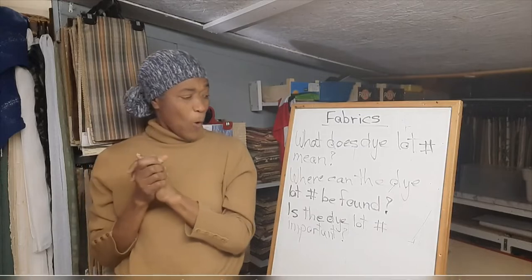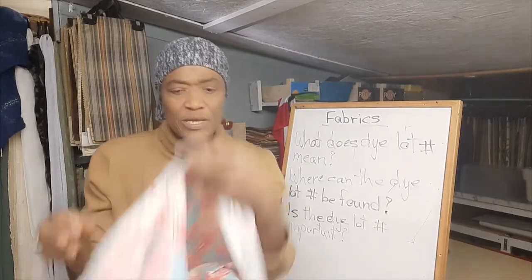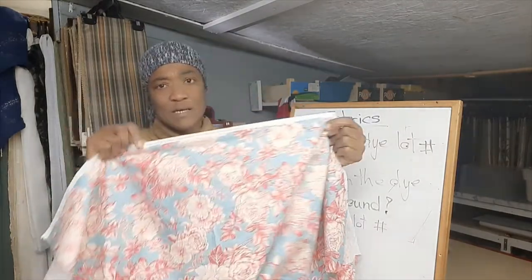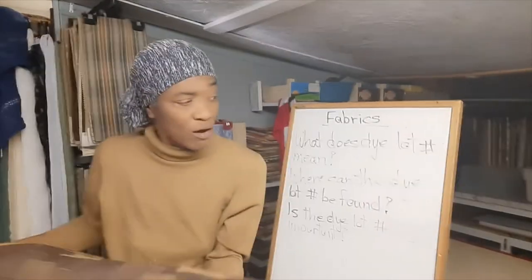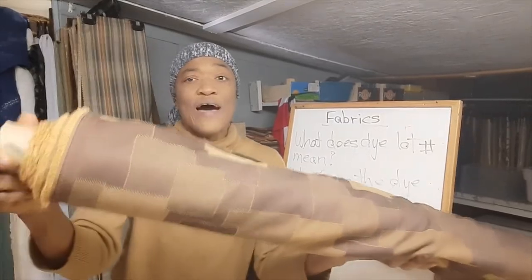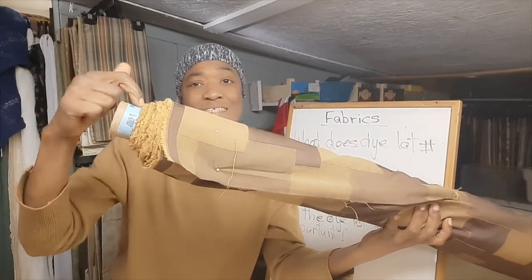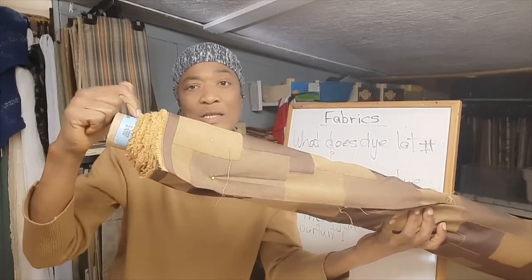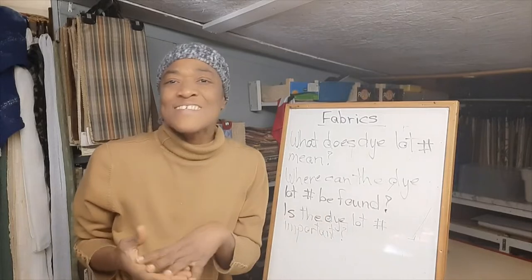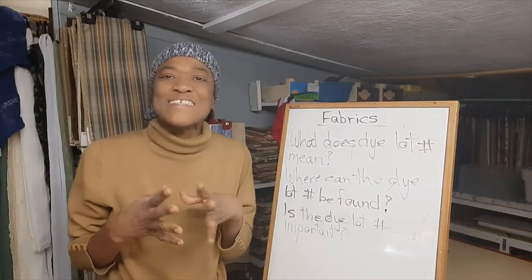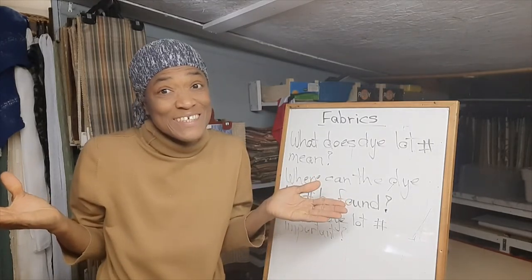Number two: where can the dye lot number be found? The dye lot number can be found on the selvage edge for some fabrics, and you can also look at the bolt of fabric at the end — there is usually a tag with the dye lot number there. If you can't find it, just ask the salesperson; they should know exactly what the dye lot number is or at least where you can find it.